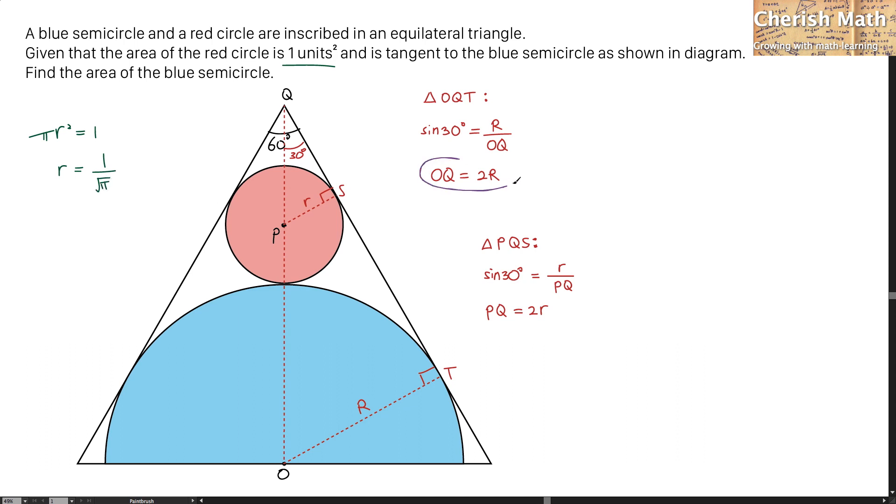By taking this value OQ that we got earlier as two times capital R, I can equate it directly with the length uppercase R, plus lowercase r, plus the length of PQ. That would be uppercase R plus lowercase r plus PQ equals 2R.